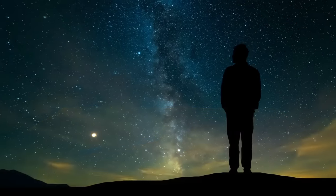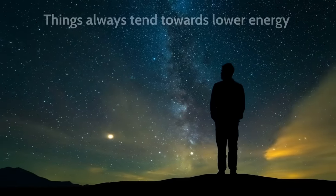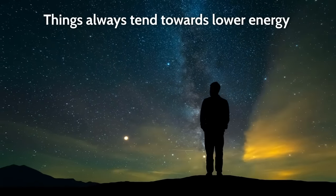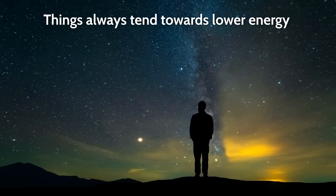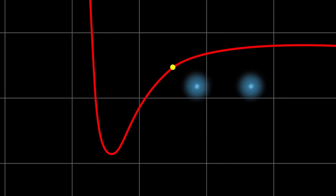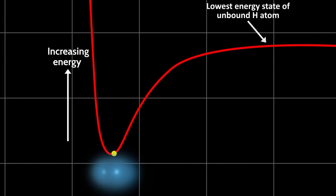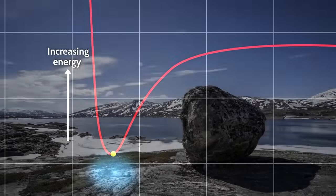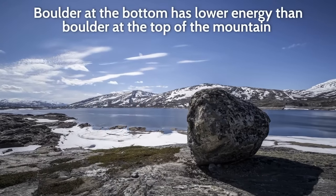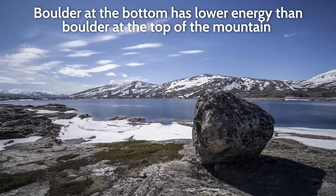Perhaps the most fundamental principle of the universe is that things always tend towards their lowest energy state. Atoms combine because sometimes two atoms such as hydrogen are at a lower energy state when they are bonded together than when they are on their own. A boulder at the bottom of a mountain is in a lower energy state than at the top of a mountain. This is the way the universe works.